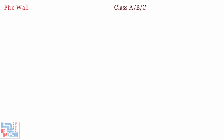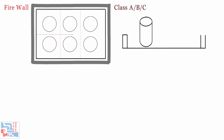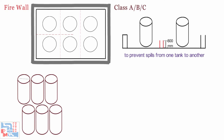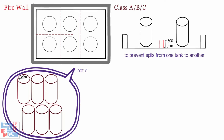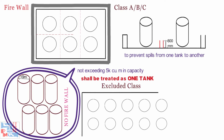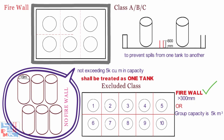Now comes firewalls. For Class A, B, and C petroleum, in a dike enclosure where more than one tank is located, firewalls of minimum height 600 mm shall be provided to prevent spills from one tank endangering any other tank in the same enclosure. A group of small tanks, each not exceeding 9 meters in diameter and in total not exceeding 5,000 cubic meters in capacity, shall be treated as one tank for firewall provision. For excluded petroleum product storage, firewalls shall be provided by limiting the number of tanks to 10 or the capacity of the group to 5,000 cubic meters, whichever is lower. Firewall height should not be less than 300 mm.